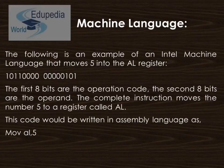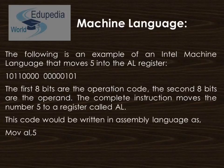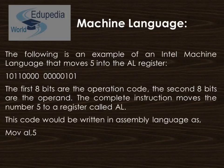The following is an example of an Intel machine language code that simply moves 5 into the AL register, where registers are the high-speed storage locations inside the central processing unit that can hold 8, 16, or 32 bits of data. They are identified by symbolic names such as AH, AL, AX, and the extended AX register. The first 8 bits are the operation code and the second 8 bits are the operand. The complete instruction simply moves number 5 to the register called AL.